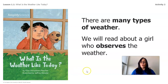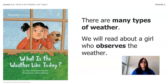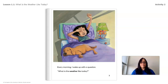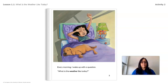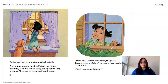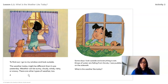So again, the question is: what is the weather like today? Every morning, I wake up with that question. I get up, I look out the window, and I ask myself, what is the weather like today? To find out, I go to my window and look outside. The weather today might be different than it was yesterday. Weather can be sunny, cloudy, windy, rainy, or snowy — and there are other types of weather too.